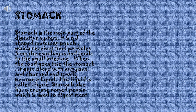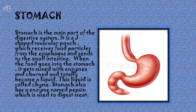Stomach. The stomach is the main part of the digestive system. It is a J-shaped muscular pouch which receives food particles from the esophagus and sends them to the small intestine. When food goes into the stomach, it gets mixed with enzymes, is churned, and becomes a liquid called chyme. The stomach also has an enzyme named pepsin, which is used to digest meat.